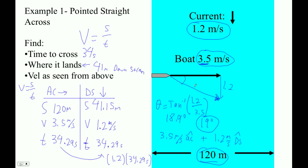And then the speed of it as it moves, since it's moving across and downstream, the speed would be the square root of 1.2 squared plus 3.5 squared. The speed would be the hypotenuse. So 1.2 squared plus 3.5 squared, and that's 3.7 meters per second is our speed.